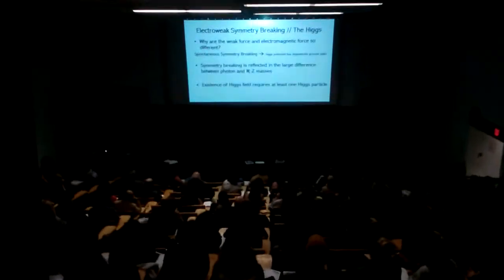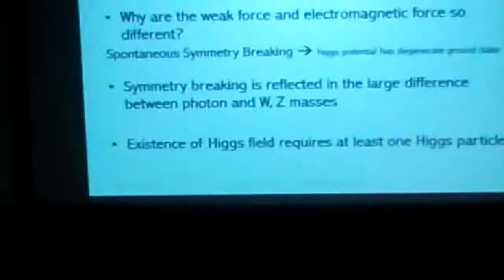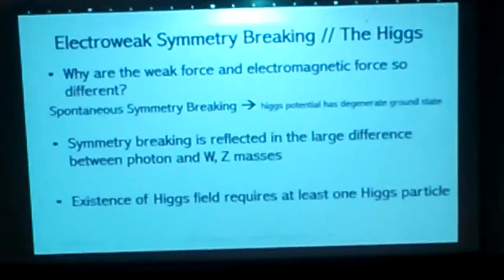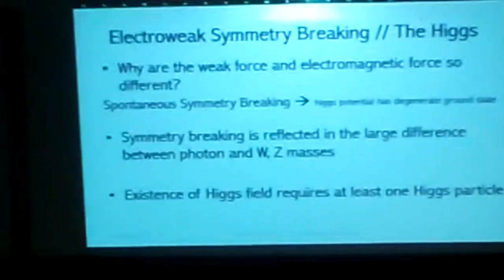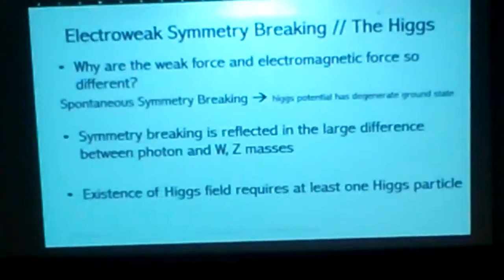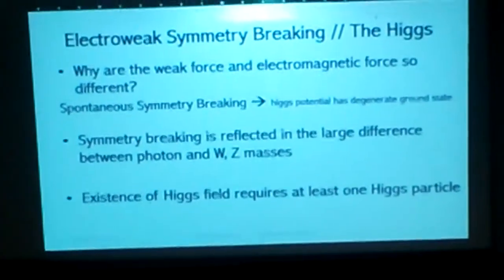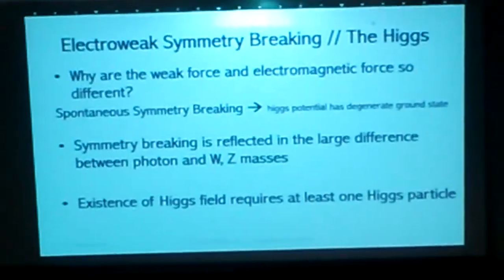It turns out that the Standard Model doesn't really work without the Higgs, which is a big problem, because you need to solve it. In quantum mechanics, it's really hard to have particles that have multiple spins — spin-1 particles. And you need spin-1 particles for things that don't have to do with very high-energy physics, like beta decay and things like that.